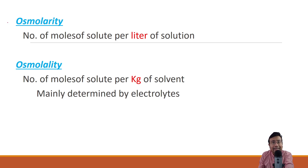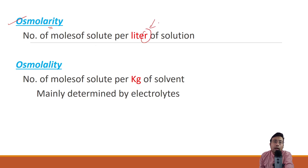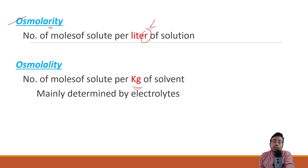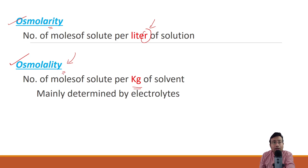Osmolarity and osmolality are two different terms. Osmolarity — with an 'r' — is the number of moles of solute per liter of solution, dealing with volume. Osmolality deals with mass: number of osmols of solute per kg of solvent. However, in medical terminology, we often use osmolality — osmoles per liter — and it is determined by solutes, primarily electrolytes.